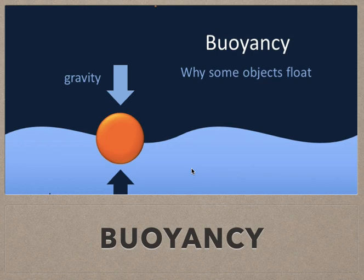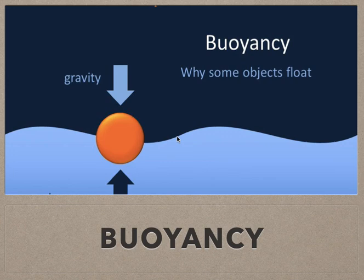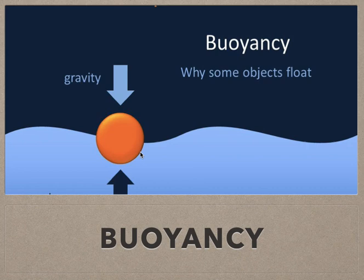But the size of the tomato is bigger and the weight of the tomato is less than the weight of the water it displaces. So the tomato floats on water. The same happens with ships and boats.